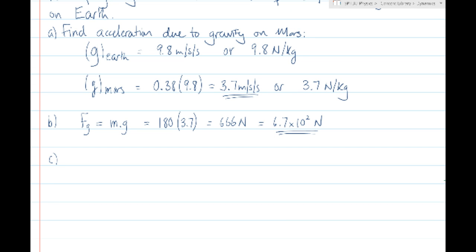Part C then asks: a rock experiences a force of gravity of 8500 newtons on Earth. How much force would it experience on Mars? There are a couple of ways of doing that. If we know the force of gravity is 8500 newtons on Earth, we could use Fg equals m times g on Earth's surface to figure out the mass of the object, since we know that g is 9.8 newtons per kilogram on Earth's surface. Then we could use Fg equals m times g with the new value of g, 3.7, for the surface of Mars, and we'd get the answer.